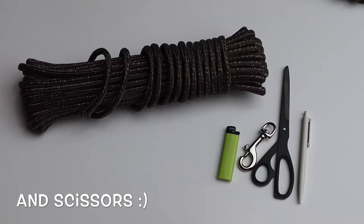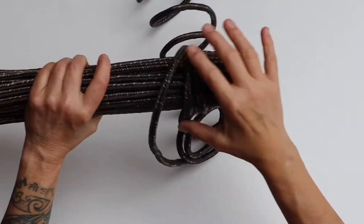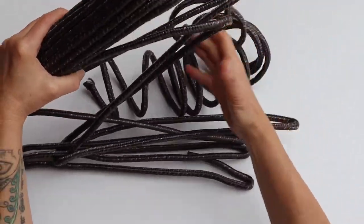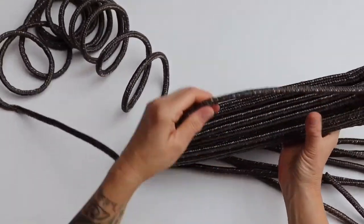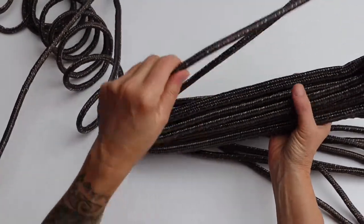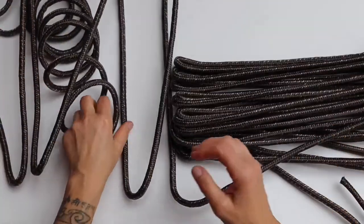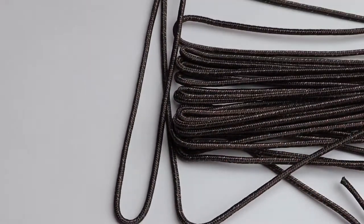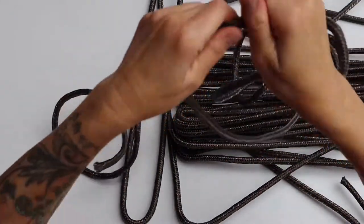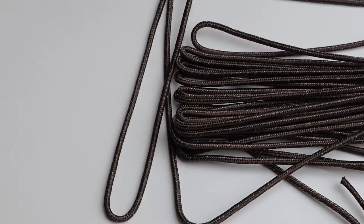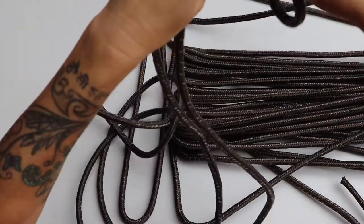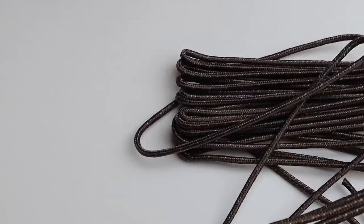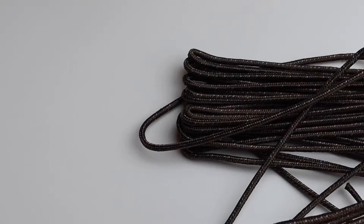We are starting by unraveling from the rope about six and a half to seven meters or however long you want your training leash in the end minus 60 centimeters for both ends. So for example, if you want a six meter training leash you have to unravel six meters 60 centimeters. Or if you want a 10 meter training rope you have to unravel 10 meters plus 60 centimeters of your rope.